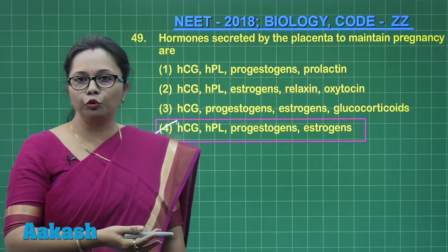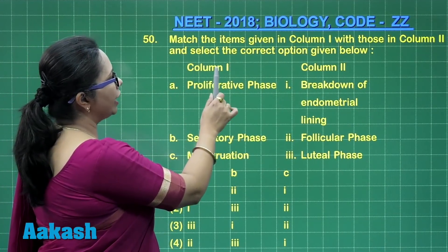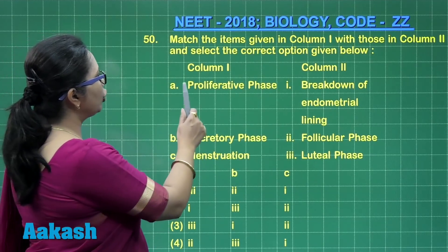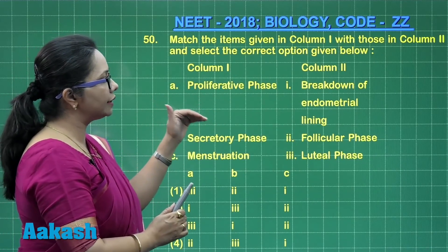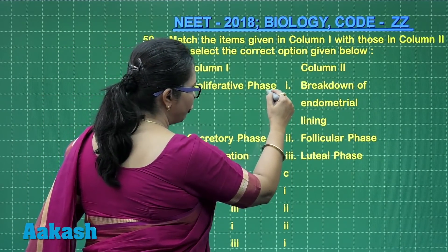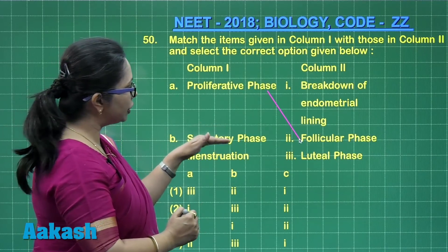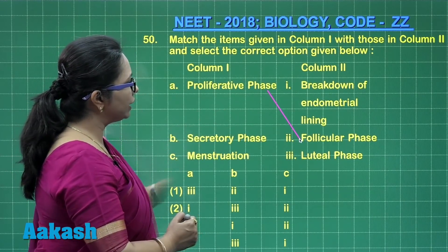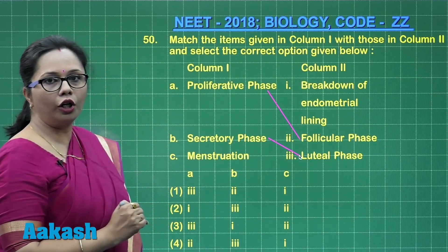Moving on to question 50, we need to match items in column one with column two. In column one, the proliferative phase is when the uterine endometrium is undergoing growth; during this time in the ovary, the ovarian follicle is growing to become a mature follicle. The secretory phase comes after ovulation when uterine glands are producing secretions; during this time, the corpus luteum has formed, which is why that stage is called the luteal phase.